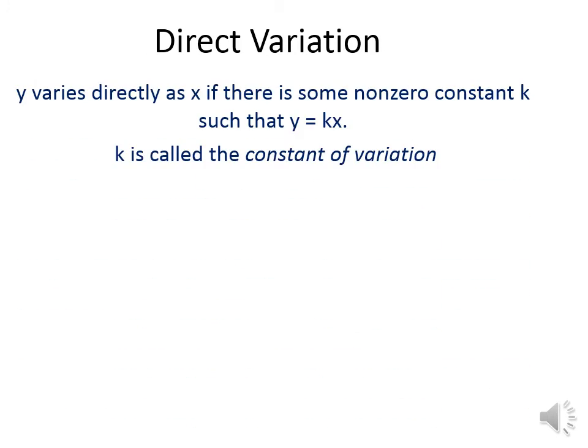Variation means we have two variables. When one of them changes, the value of the other must be changed. The first type of variation is direct variation, and we can say that y varies directly as x if there is some non-zero constant k, such that y equals k times x. k is called the constant of variation, and we need to find the value of this constant all the time.